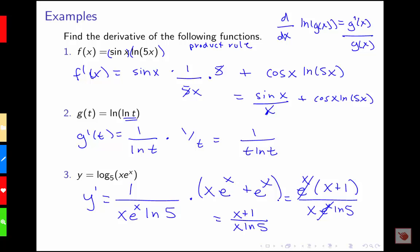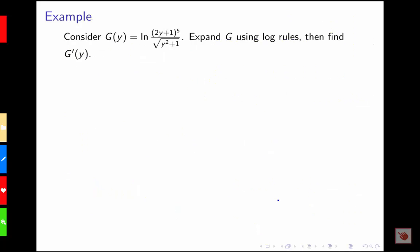One of the big applications of our log rules is logarithmic differentiation. To get ready for that, we'll practice taking a function where we have a log involved and use log rules to expand it, making it much easier to differentiate. For g of y equals log of (2y + 1) to the 5th over the square root of y squared plus 1, we could use the chain rule and quotient rule directly, but that's very messy, so we want to expand with log rules.